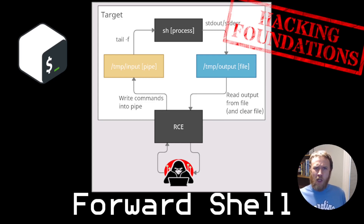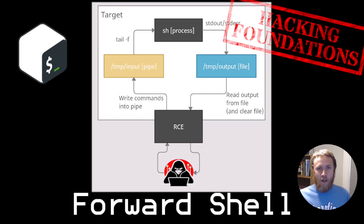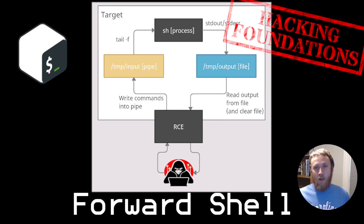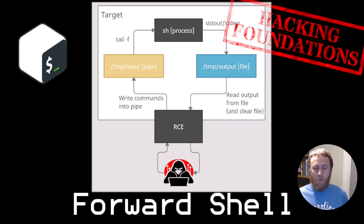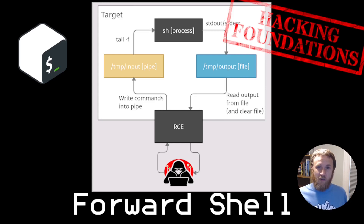So what's a forward shell? This is a technique that I first saw IPSEC put together in a video years ago, and I always thought this was a super cool one. It's a bit of a hack where you use a pipe file to convert remote code execution into a persistent shell. So we think like you have a web shell or some sort of SSTI vulnerability and you want to convert that into a persistent shell.